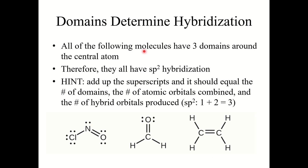You may have noticed that the number of electron domains determines the hybridization. You can add the superscripts to get the number of domains, atomic orbitals combined, and hybrid orbitals produced. For example, looking at a molecule where the central atom nitrogen has three electron domains — sp² hybridized, since 1+2=3. Likewise, a carbon with three electron domains is also sp² hybridized.